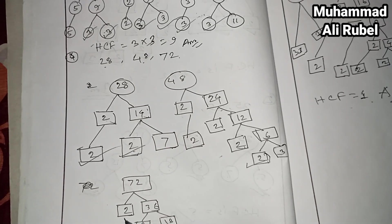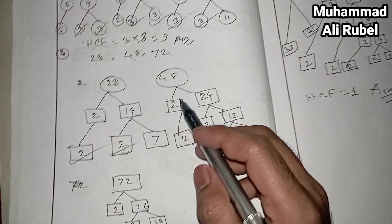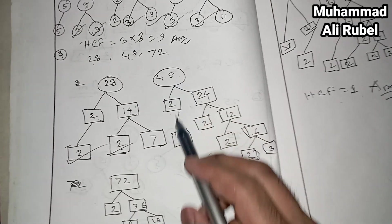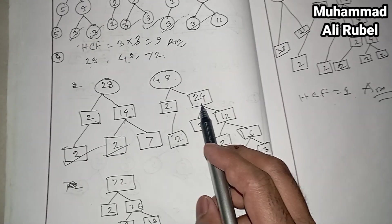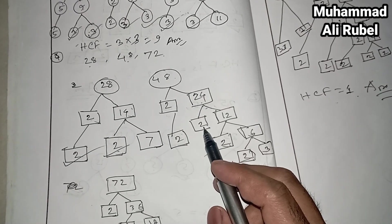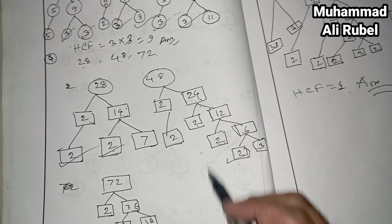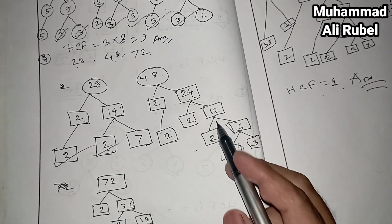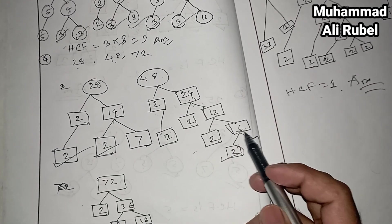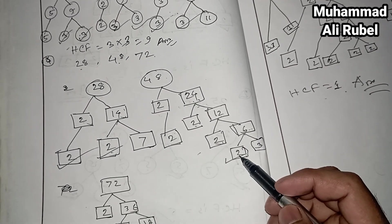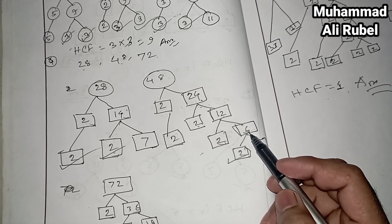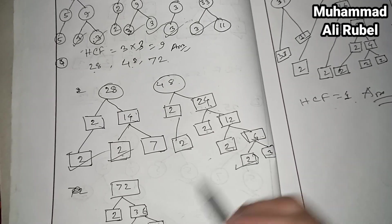Now look at number 4: 28, 48, and 72. For 28: 2 times 14, and 14 is 2 times 7. For 48: 2 times 24, then 2 times 12 equals 24, 2 times 6 equals 12, and 2 times 3 equals 6.